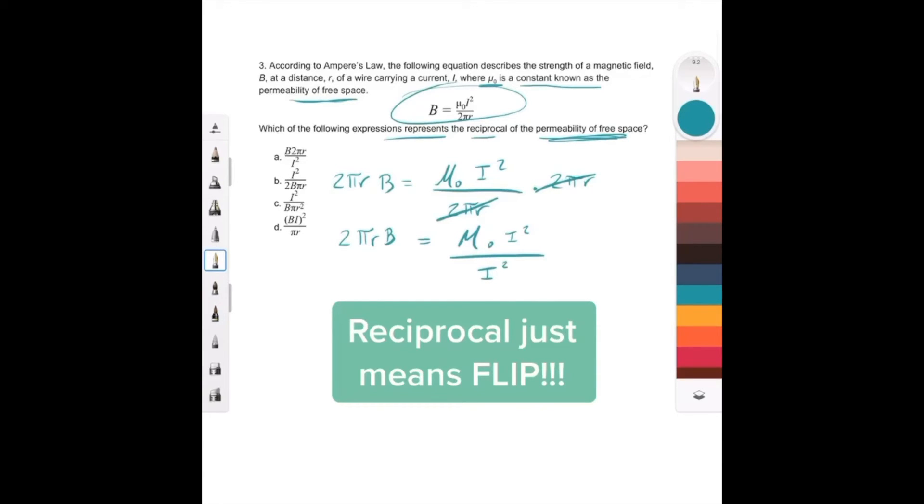Divide both sides by i squared. And then we're left with mu naught equals this.